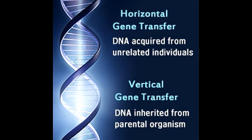It occurs by the conveyance of DNA from a donor cell to a recipient cell. Once the genetic material is received, it is incorporated into the genome of the recipient cell, thereby producing a recombined cell.